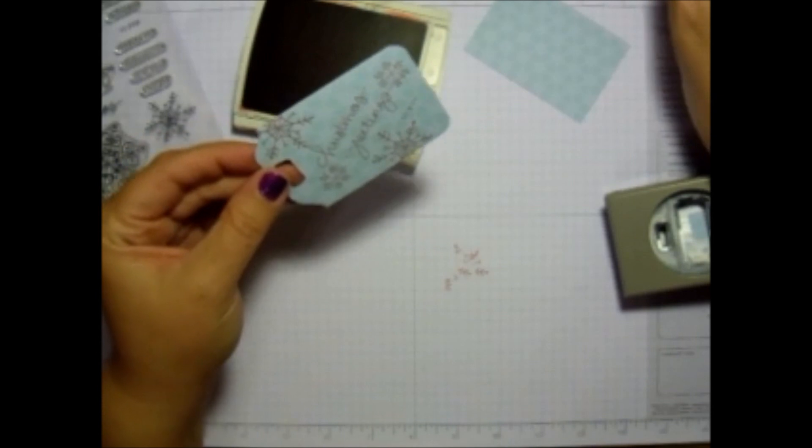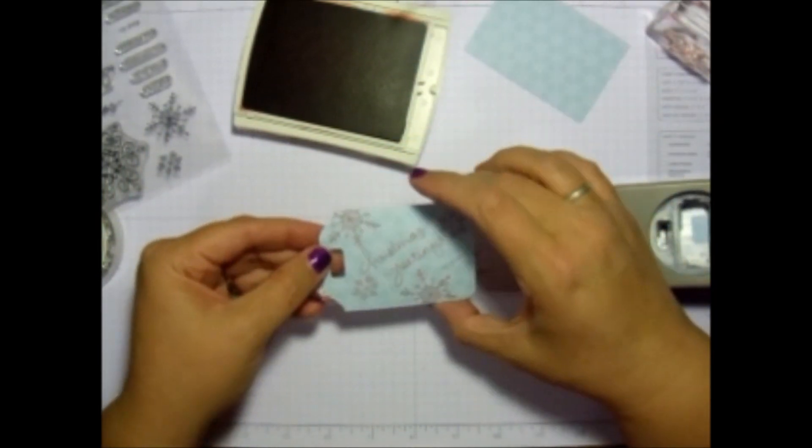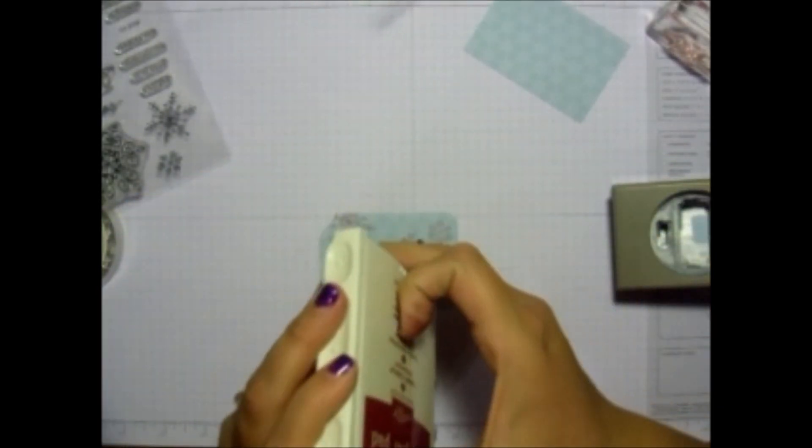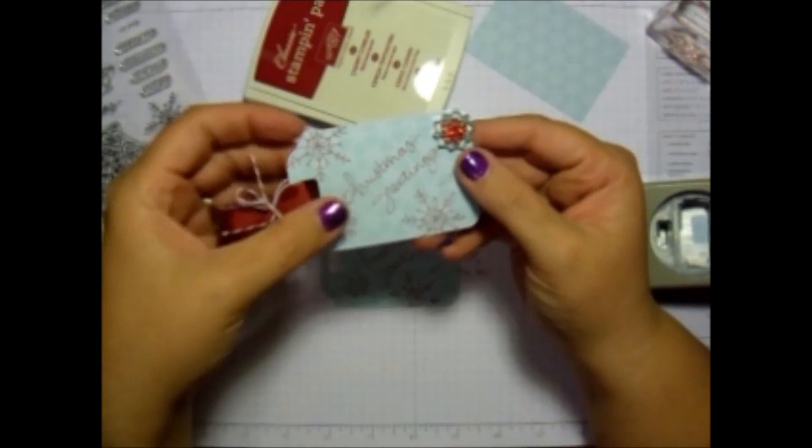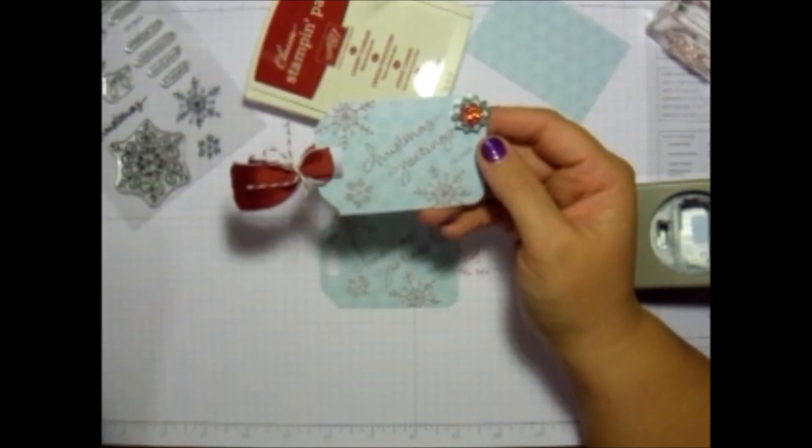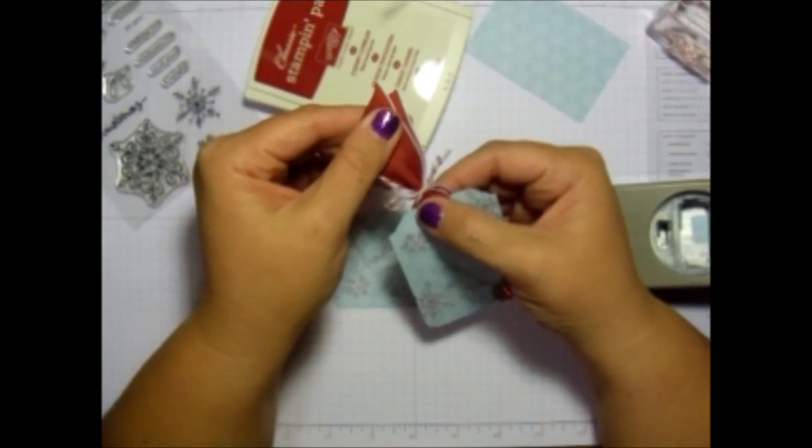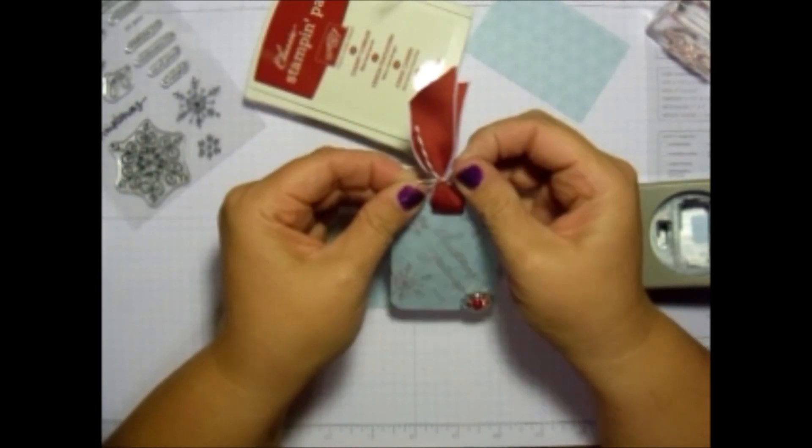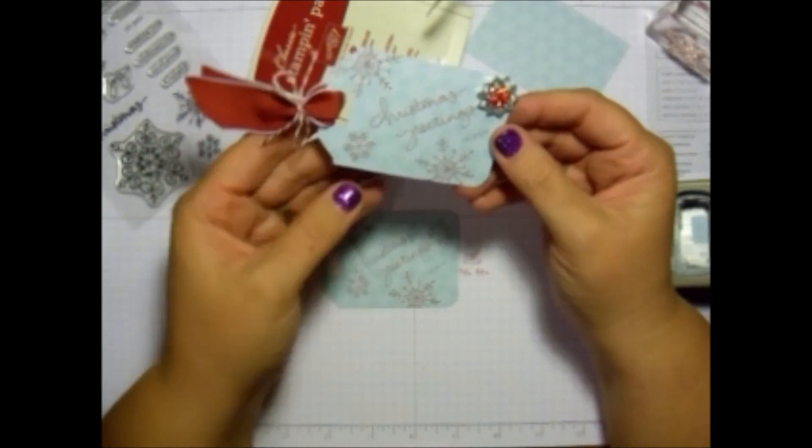Again, you can be done at this point. You could add some embellishments if you wanted to. What I did on my last one is I added some of the embellishments, the frosted finish, right here. And then I used some Cherry Cobbler ribbon and just tied it off with twine. So that is how you make it. You can design them any way you want.